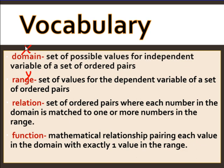So every ordered pair is a relation. A function is a mathematical relationship pairing each value in the domain with exactly one value in the range. One x value can have only one y value. You can't have the same x value have two different y's — that cannot happen. That would not be a function.